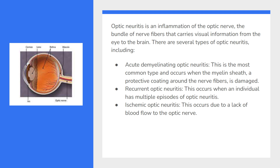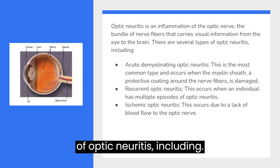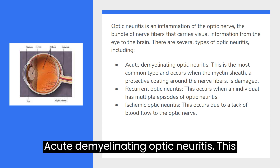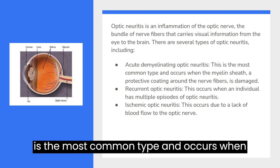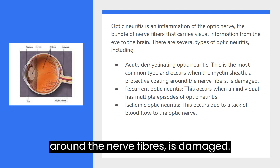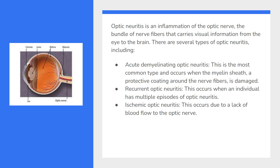There are several types of optic neuritis, including acute demyelinating optic neuritis. This is the most common type and occurs when the myelin sheath, a protective coating around the nerve fibers, is damaged.